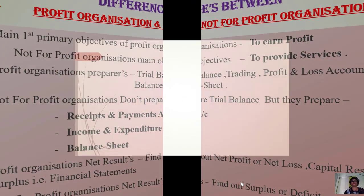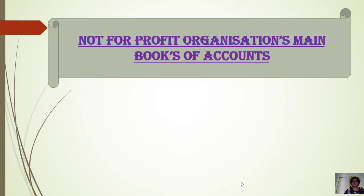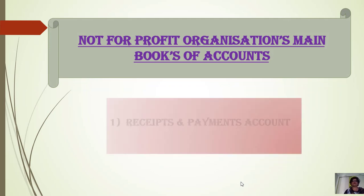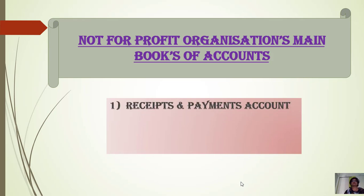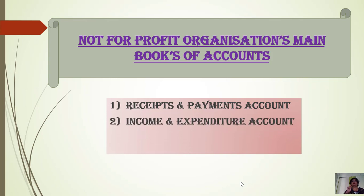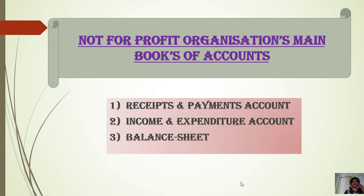Not-for-profit organization's main books of accounts: first, receipt and payment account; second, income and expenditure account; and third, balance sheet. So when we solve the problem of NPO, these accounts and this statement are important. Then I will explain the meaning of income, balance sheet, and receipt and payment account. Watch each and every video so your doubts are cleared and you can easily solve the problem of NPO.